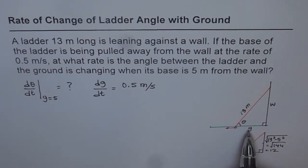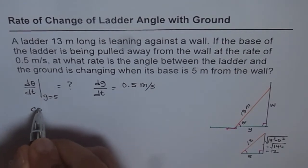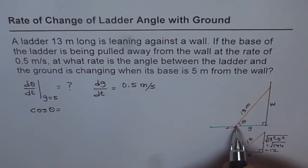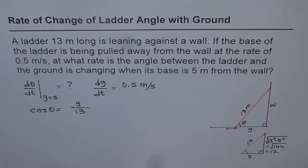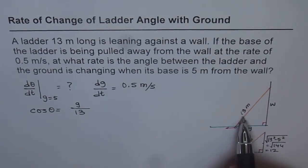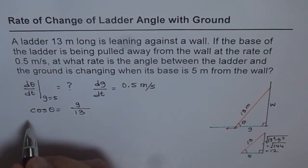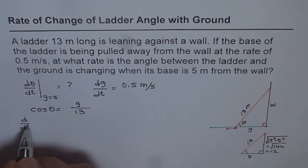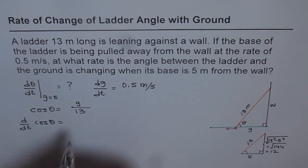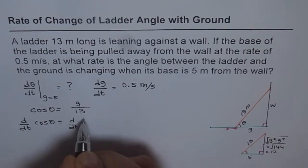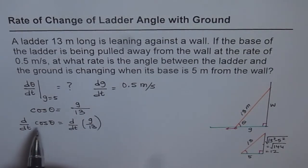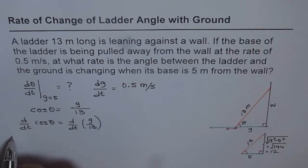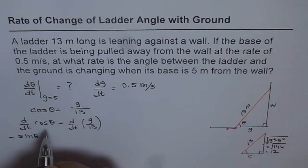So that is a good relation. We will start with cos θ = adjacent over hypotenuse = g over 13. Now we can differentiate both sides with respect to time. So we get d/dt of cos θ equals d/dt of g over 13. The derivative of cos θ is minus sine theta.